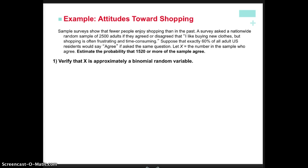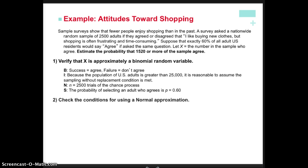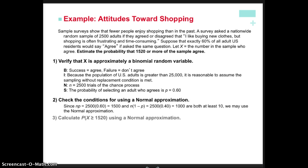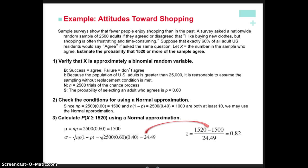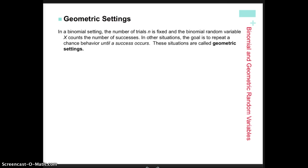We'll continue this lesson on another video but finish binomial first. Pause now and read the example on page 396 about shopping. First, determine it is approximately a binomial random variable using BINS. Then check conditions for the normal approximation: multiply n times p and n times q (1 minus p) and verify both are 10 or larger — they are. We then use the mean and standard deviation formulas and plug them into a z-score. We're now ready to start geometric distributions, so finish your notes and I'll see you in the next video.